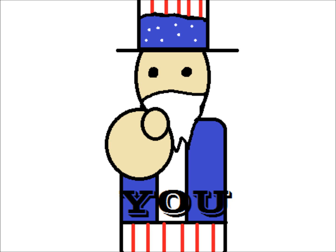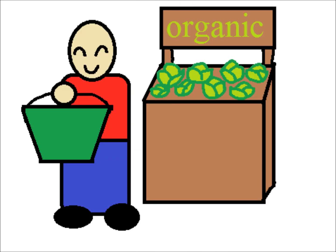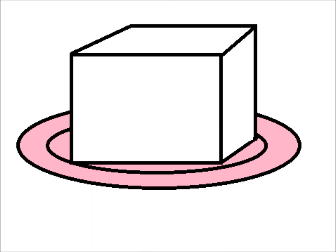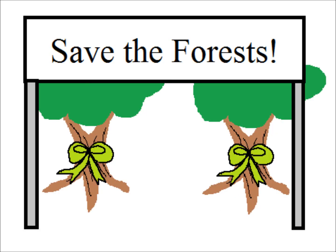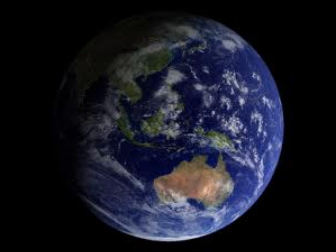So what can you do? You can buy organically grown food. You can eat less meat. You can drive less. You can support or even join conservation groups. If we all do our part, maybe we can get the world spinning again.